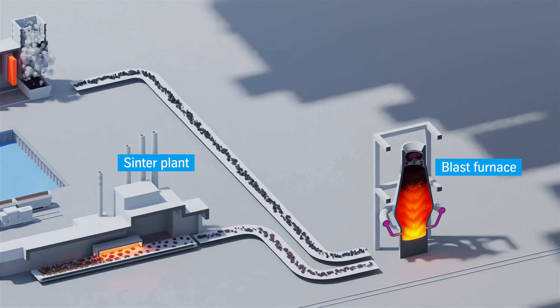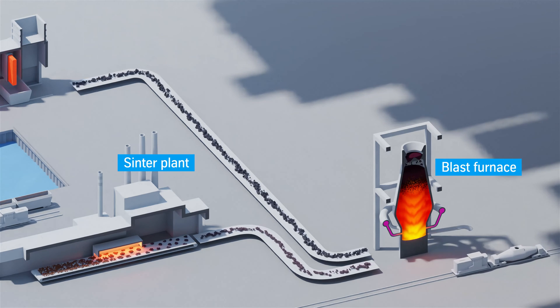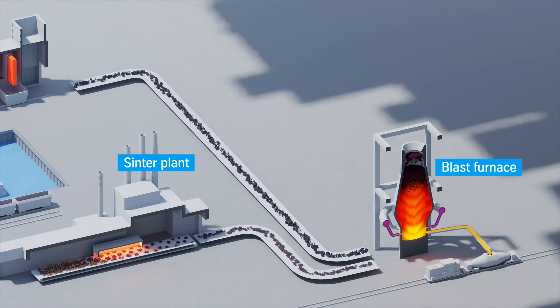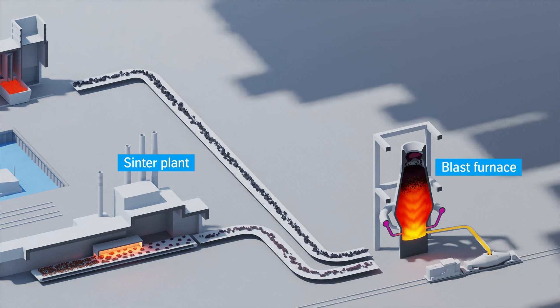While melting, the materials descend to the bottom, producing hot metal and slag. In the so-called tapping, the finished hot metal and slag are removed from the blast furnace at a temperature of 1,500 degrees.